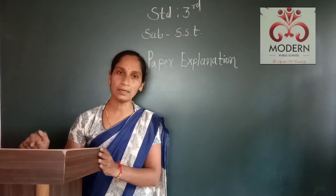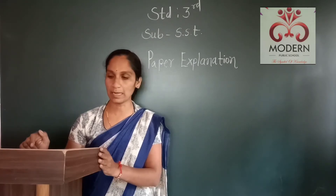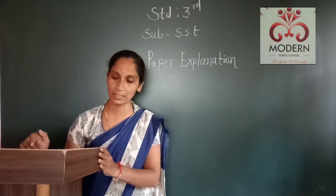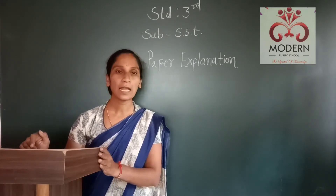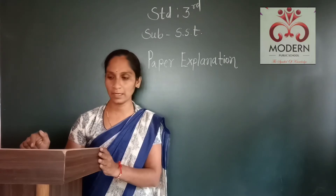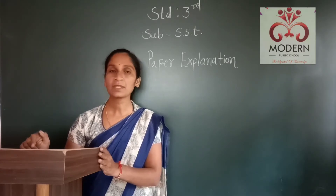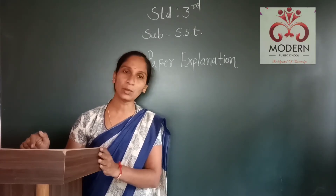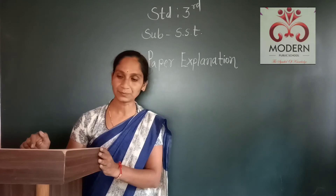Third number: there are [blank] union territories in India. Option A: 8, Option B: 6, Option C: 9, Option D: 7.